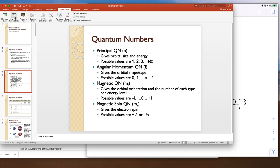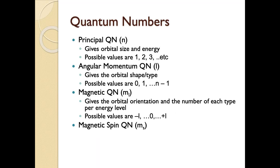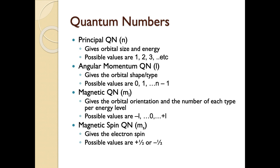Our last quantum number is the magnetic spin quantum number m-sub-s. This tells us about the spin of an electron. We assign all electrons as having either spin up or spin down. From a quantum perspective, we assign a mathematical value of either plus one half or minus one half, which you can think of as spin up and spin down respectively — as we'll see when we look at orbital filling diagrams.